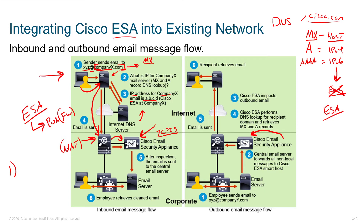Once the email comes in, step two is the detailed heuristics. If we don't know that it's great and we don't know that it's garbage, we go through and try to do some intelligent filtering. Step three is what we see here: the ESA sends the email — after inspection — to your central email server, whether that's Exchange, Kerio, or whatever you're using inside your environment. That mail server is where all the email is held, and users check their email directly with that server.